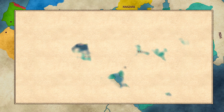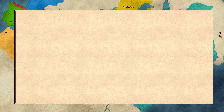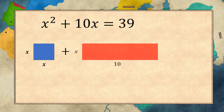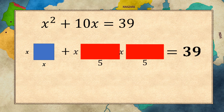I'll give you an example of how to use the completing the square method. Let's say I want to solve the equation x squared plus 10x equals 39. You have the x squared represented as a square, the 10x represented as a rectangle, all equal to 39. First, I am going to split the rectangle in half so I will have two 5x rectangles.